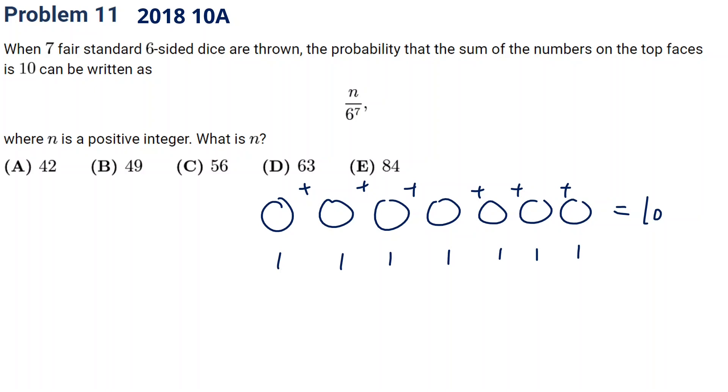When we do 10 minus 7, we have 3 left. We distribute those three to any of the seven dice. It's like we distribute three things to seven people in any order. Using the stars and bars method, we have three stars and need to distribute to seven people, which means we need six dividers.